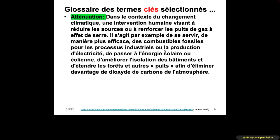Another important term is mitigation (attenuation). In the context of climate change, an intervention to reduce sources or reduce greenhouse gases is called mitigation. These efforts can include using fossil fuels differently in industrial processes or electricity production, changing energy sources toward clean energy like solar, or implementing processes in the construction sector such as building insulation or forestry, knowing that forests absorb greenhouse gases like carbon dioxide.